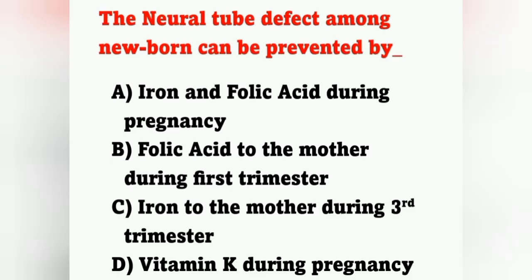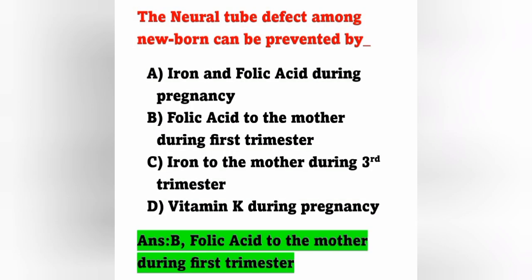Next question: Neural tube defect among newborns can be prevented by — options: option A, iron and folic acid during pregnancy; option B, folic acid to the mother during first trimester; option C, iron to the mother during third trimester; option D, vitamin K during pregnancy. Neural tube defect can be prevented by giving folic acid to the mother during the first trimester. Option B is the correct answer.